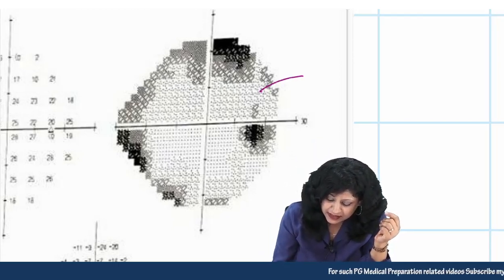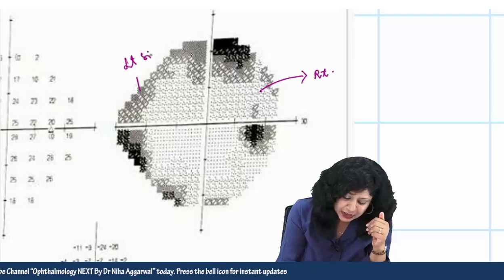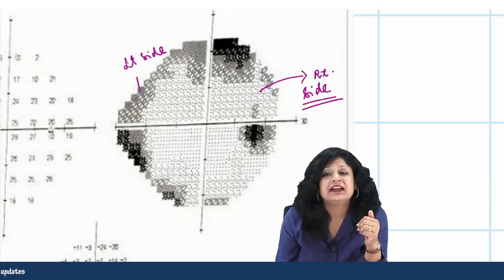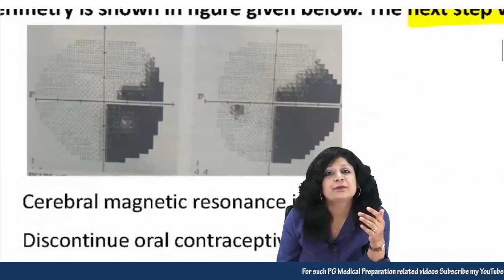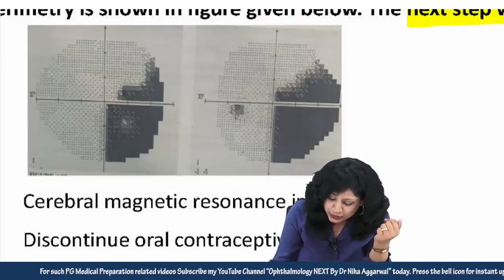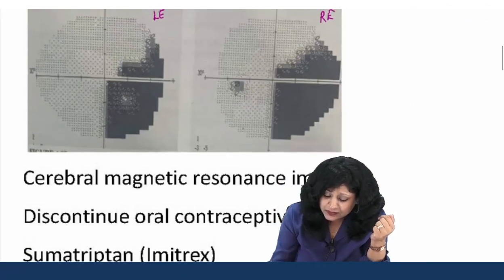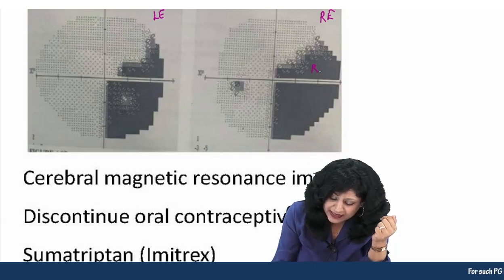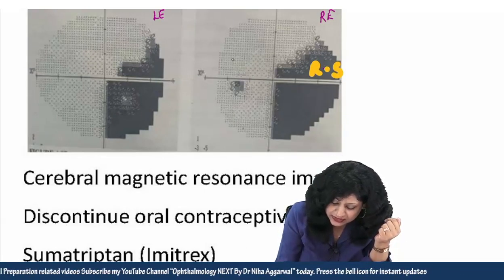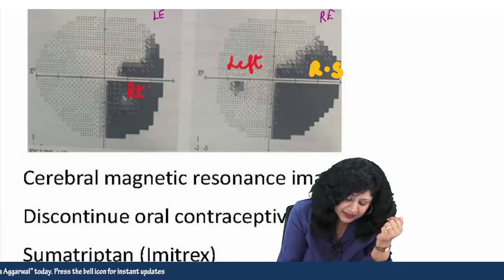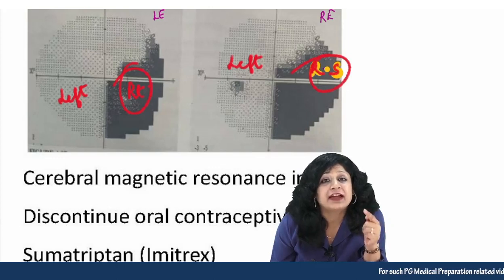My right-hand side will be the right side — this will be the right eye field — and my left-hand side will be the left side. So very easily you can tell which side it is. This is the right side, this is the left side. Now on this basis, looking at this printout, it is very easy to find out which eye it is and which side it is — this is my right eye field and this is my left eye field. So looking at the sides, the right side of both eyes are affected.